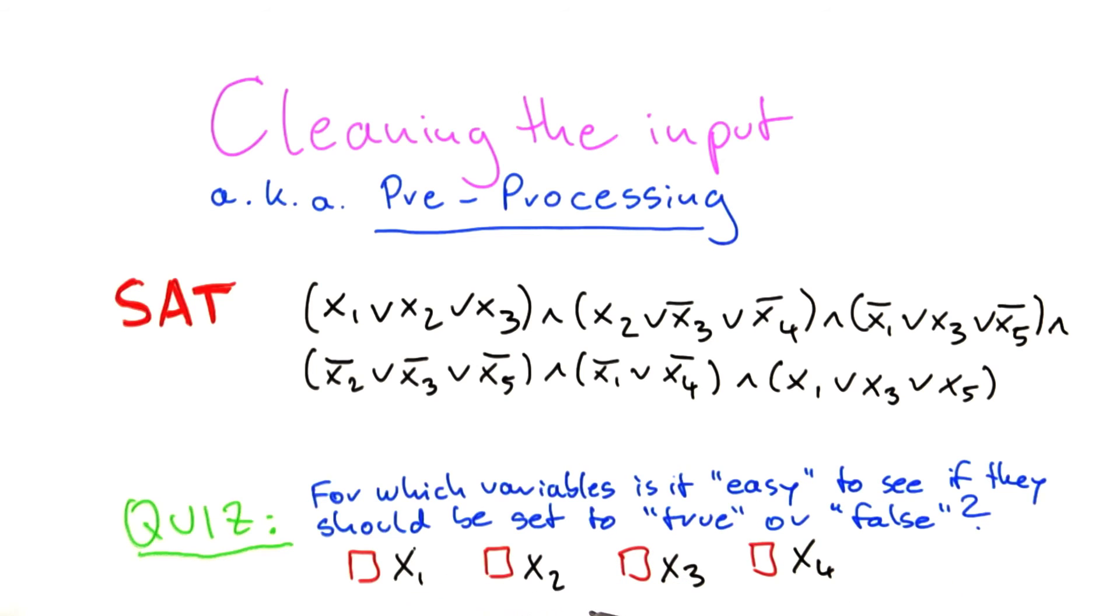Nevertheless, if you look at x1, x2, x3, and x4, we're again going to ignore x5 here. Then I think it's still possible to kind of easily see for one of those variables here if that should be set to true or false. Of course, this is a bit harder than the previous question, but I think you can nevertheless figure it out if you look closely at those four variables here.